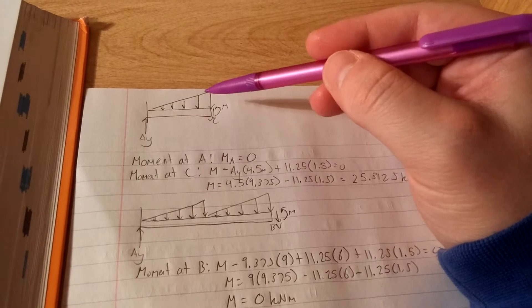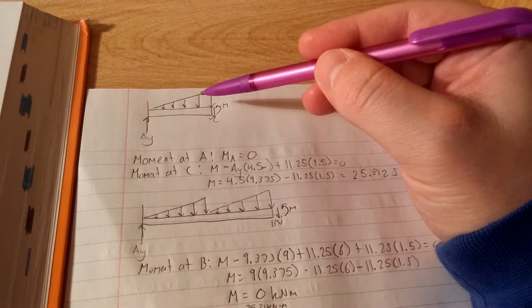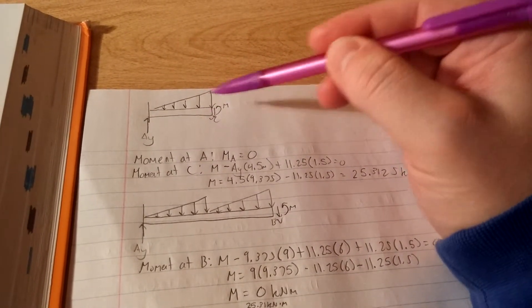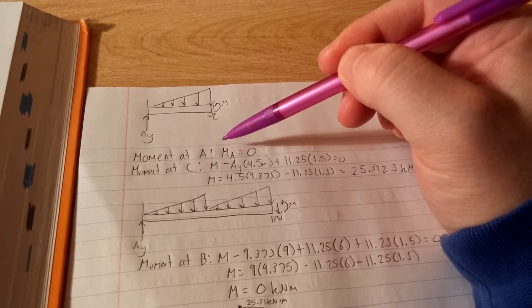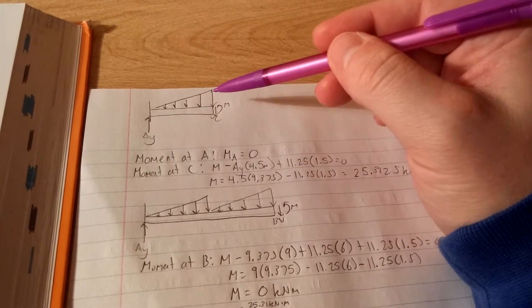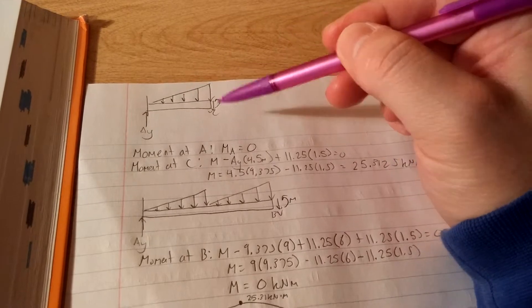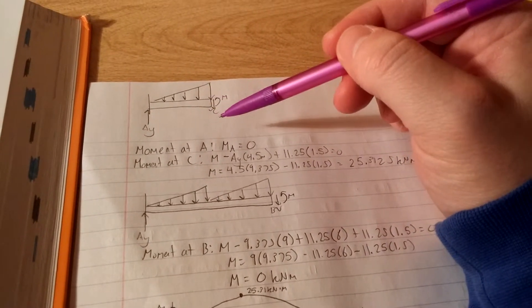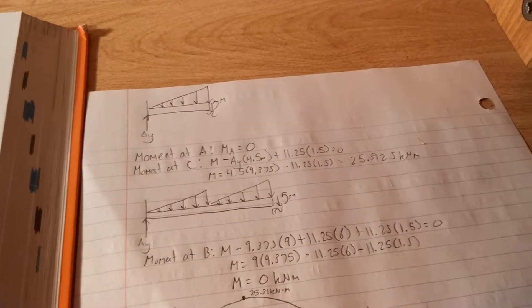And then whatever this is going to be, it's going to create a counterclockwise rotation. So that would be positive. But since we're at C, we can take the whole value of this intensity. And from the shear diagrams, we figured out that's 11.25.